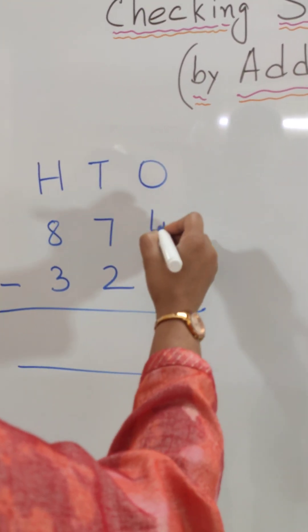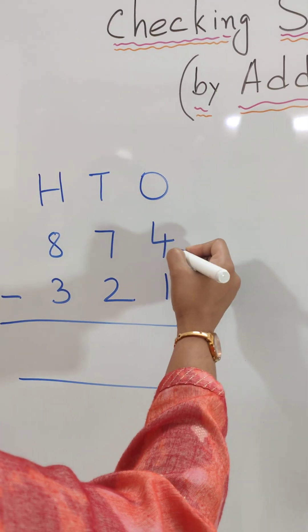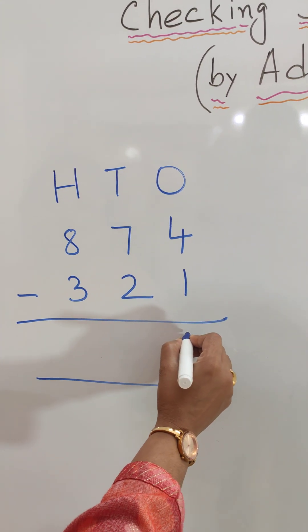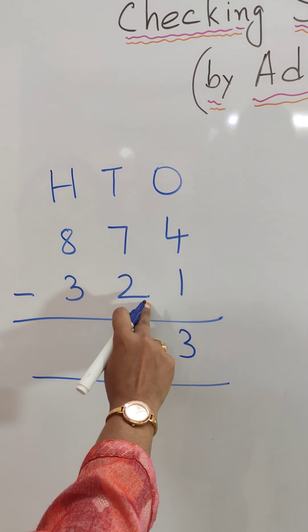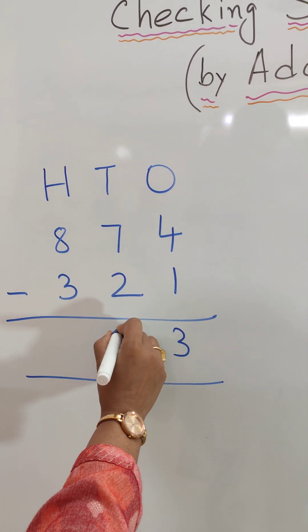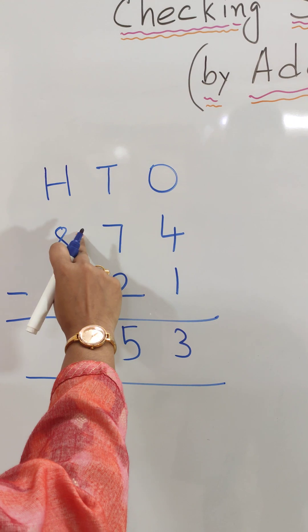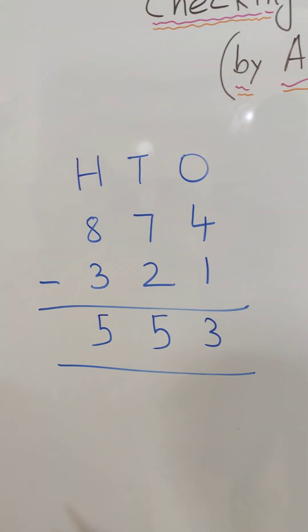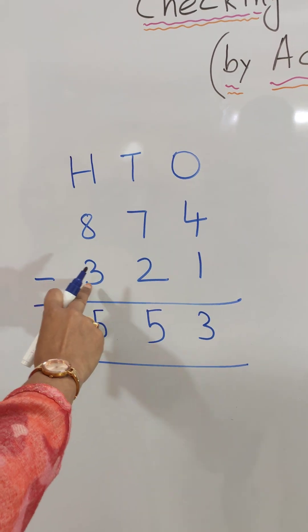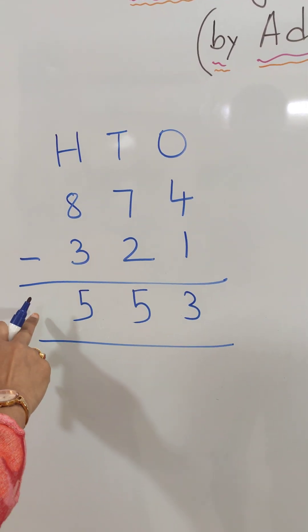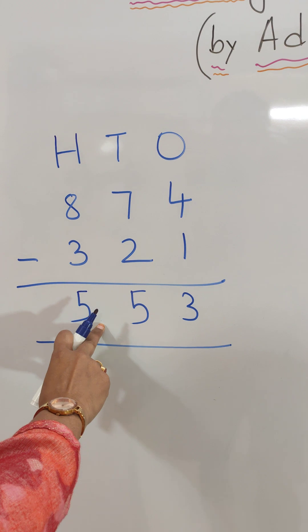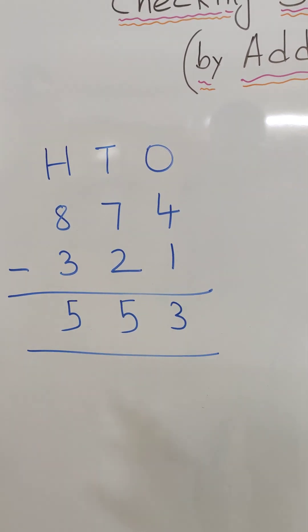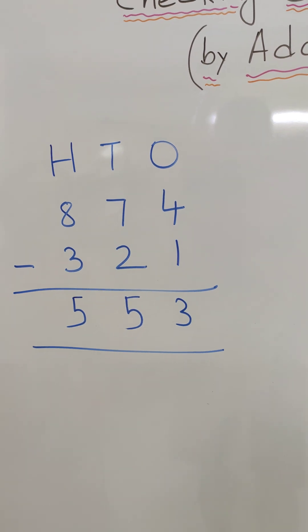Okay, first let's subtract. Under ones we see 4 minus 1 which is equal to 3. 7 minus 2 which is equal to 5. 8 minus 3 is 5. So 874 minus 321 we get our answer as 553. Now this subtraction we don't know whether it's correct or wrong.